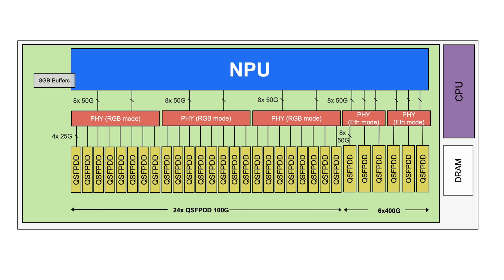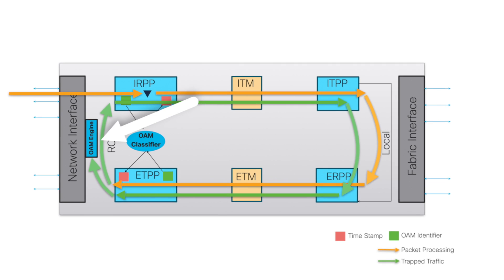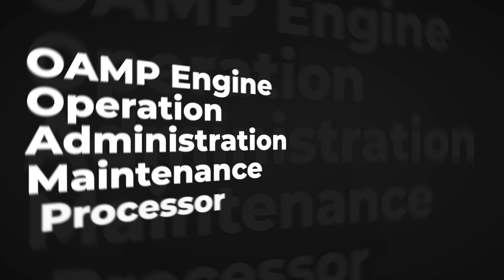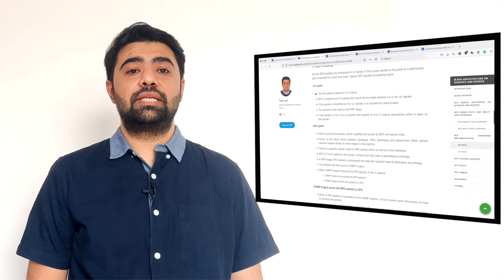When a BFD packet is received on the router or generated, where does it happen exactly — in the route processor, the line card CPU, or some specific element inside the forwarding ASIC itself? BFD implementation varies platform to platform. For NCS 5500 and 500 series platforms, BFD is offloaded to the network processing unit. The BFD hardware offload improves scale and reduces network convergence time by sending rapid BFD control packets. In the ingress pipeline, BFD is processed in two passes. The OAMP engine is the most important part — it is dedicated hardware that helps process BFD packets. There is a dedicated XR Docs article explaining the BFD architecture on NCS 5500 and NCS 500 series platforms.